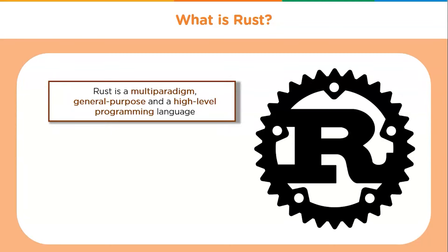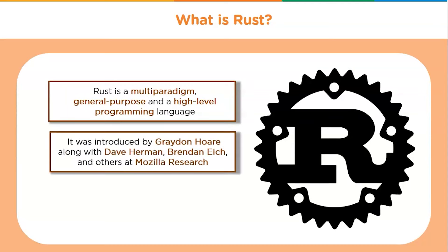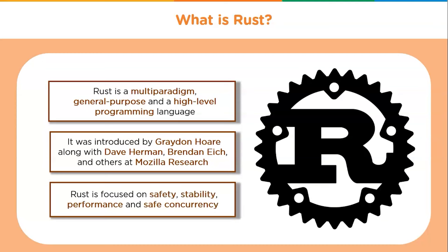Now let us know what Rust is. Rust is a multi-paradigm, general-purpose and high-level programming language. It was introduced by Graydon Hoare along with Dave Herman, Brendan Eich, and others at Mozilla Research. Rust focuses on safety, stability, performance, and safe concurrency, and has seen growth and adoption across various industries.